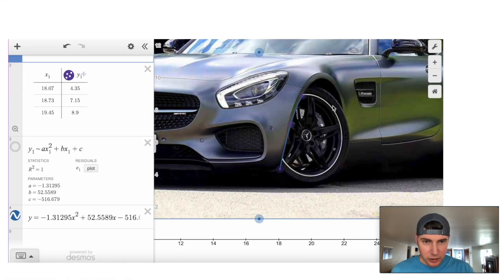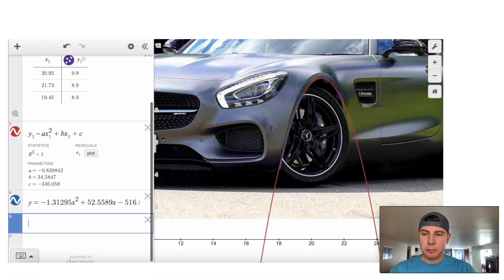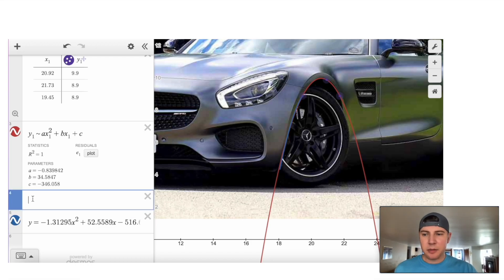And now we can just do it again for another part of the wheel well. So I'll drag this point here and this point here, and let's turn the parabola back on. And so now we just want to try to fit this as well as we can. So I like that one right there. So same thing, we're going to plug in another equation, drag this down.